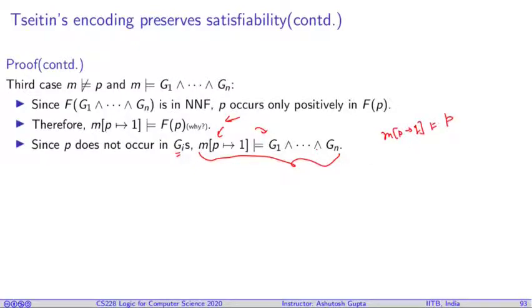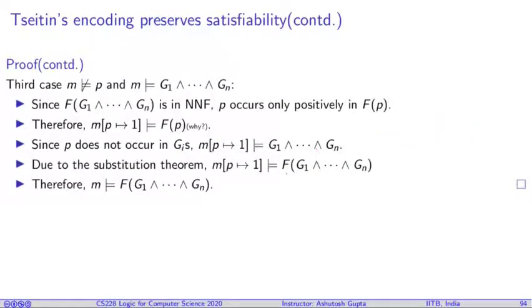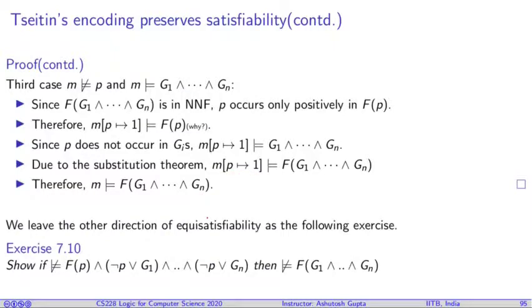So now we can apply again my substitution theorem and we can conclude that M[P→1] satisfies F(G₁ ∧ ⋯ ∧ Gₙ). But P does not occur in F. So therefore, I can basically ignore this modification and conclude that M satisfies the solution. We also need to prove the reverse direction, which is exercise 7.10 and we have left that for exercise.